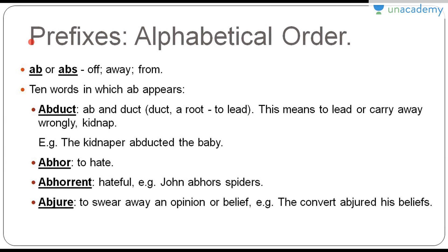After a quick revision of the role of prefixes in changing the meaning of a word, we'll now be learning prefixes in alphabetical order. The first prefix is 'ab', which has a meaning of off, away, or from. The first word is 'abduct' — it has two blocks: the prefix ab and the root 'duct', which means to lead. So abduct means to carry away wrongly, or kidnap. A related word is abduction.